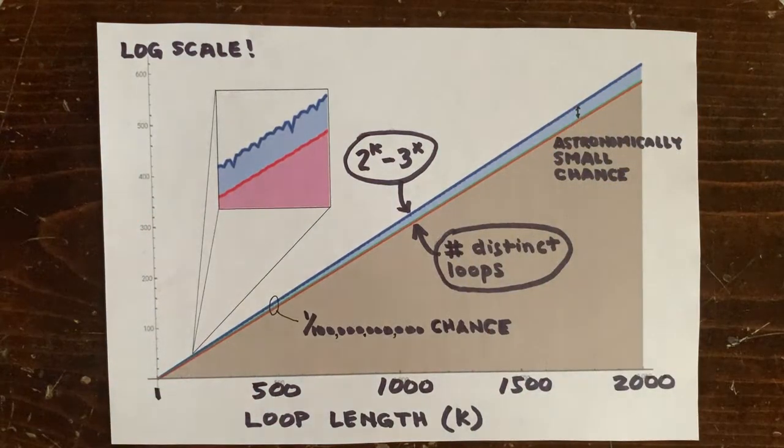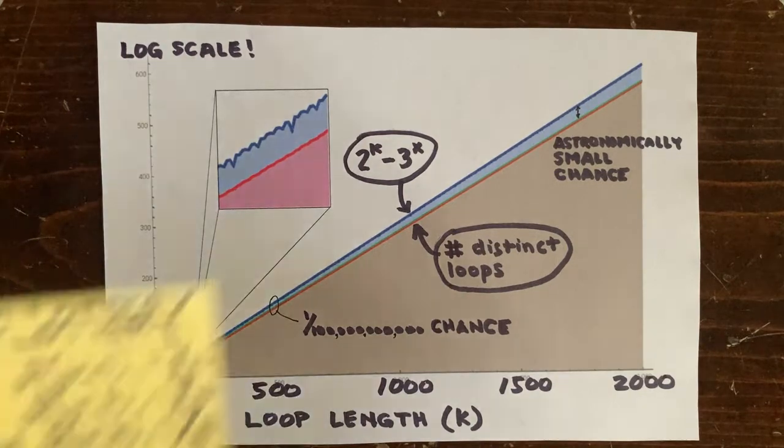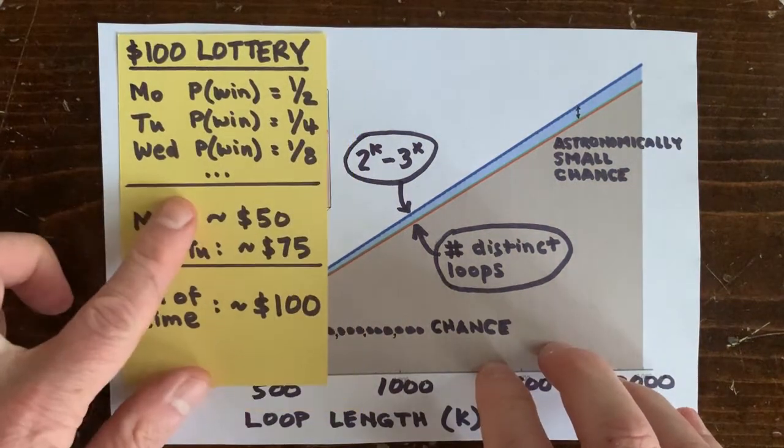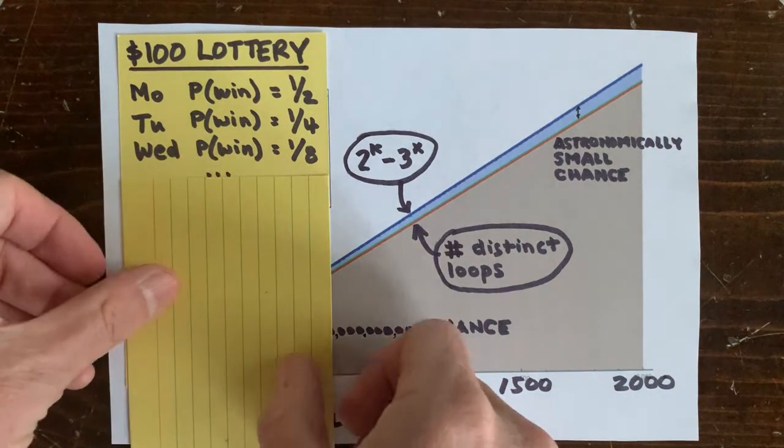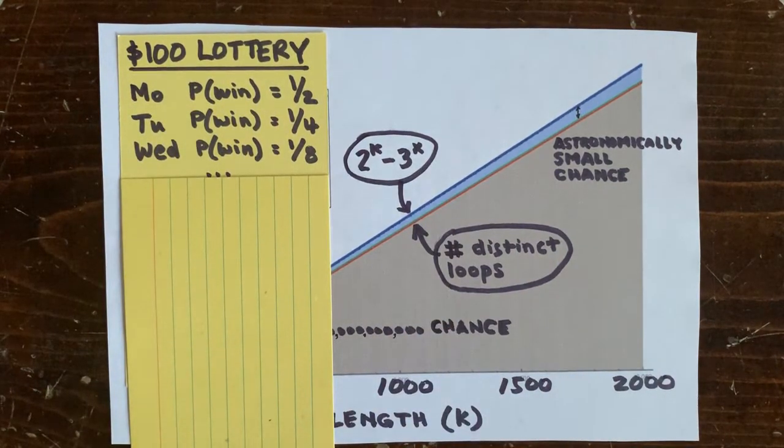So the odds at any particular loop length are not that good. But we have an infinite number of loop lengths to try, so surely we get lucky with some of them. Well maybe not. Think of it this way. Suppose you have half a chance to win a $100 lottery on Monday, a quarter of a chance on Tuesday, an eighth of a chance on Wednesday, etc.